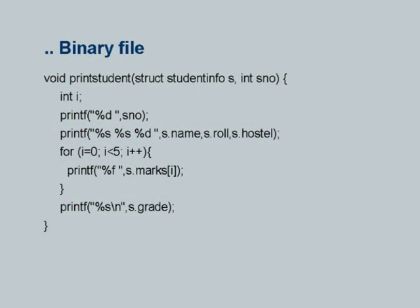For example, s.name and s.roll are of character type, but s.hostel is integer and therefore through a %d format specification I will print it out as a visible decimal number. Similarly, marks which are floating point numbers are converted through a %f specification so I can see them in a readable fashion. The grade of course is a character string printed with %s.